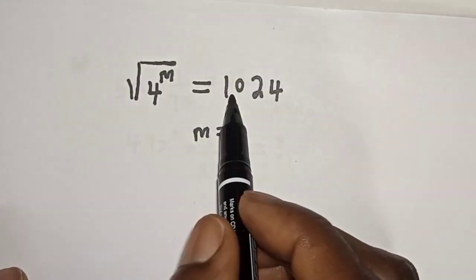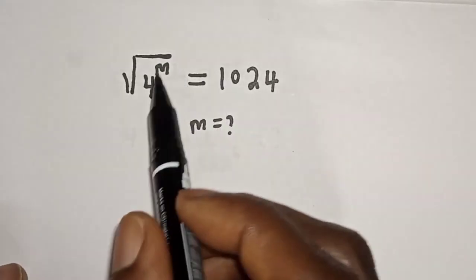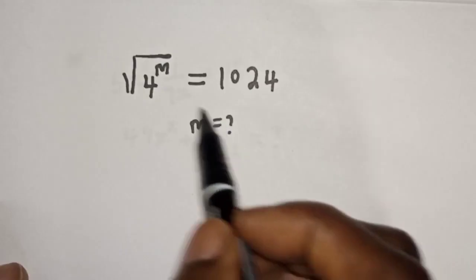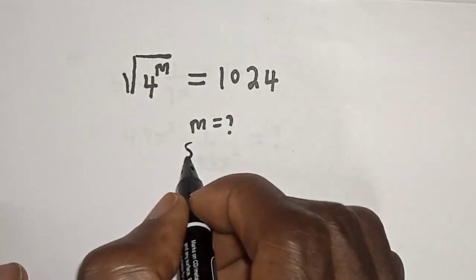Square root of four to the power m is equal to 1024. What is the value of m? Hi everyone, welcome to my class. In this class we want to find the value of m from this equation. But before we proceed, please don't forget to like, share, comment and subscribe. Solution.